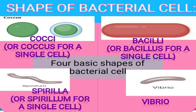Bacterial cells have four basic shapes. First is coccus, which is a spherical or round-shaped cell. If there are more than one spherical cells, we call them cocci (plural), and a single cell is called coccus. Next is bacillus, which is a rod-shaped bacterial cell — plural is bacilli, singular is bacillus. Then there is spirilla, which are spiral-shaped or curved cells, singular is spirillum. And the last one is vibrio, which is a comma-shaped bacterial cell.